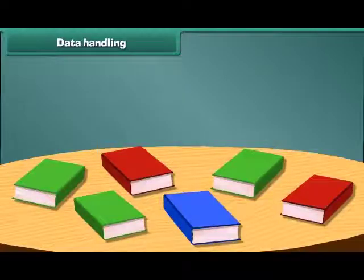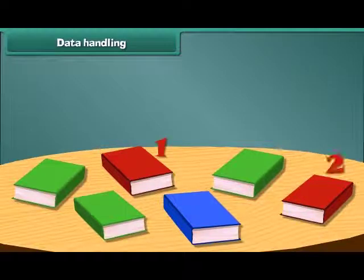Friends, now let's count and arrange these books in the bookshelf. How many red colored books are there? 1 and 2. There are 2 red books. And how many blue books are there? Let's count. 1. There is only 1 blue book.